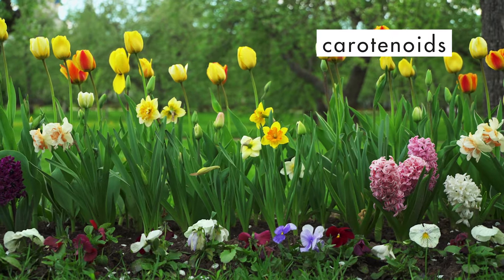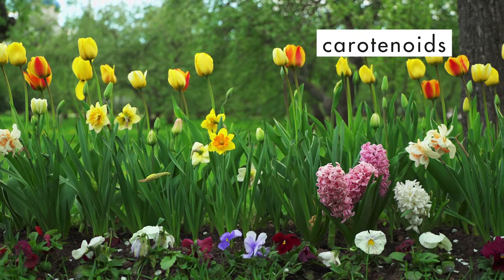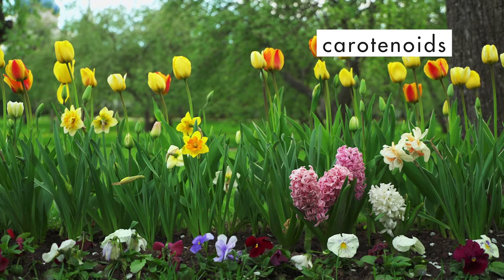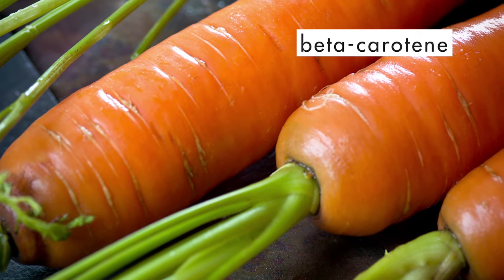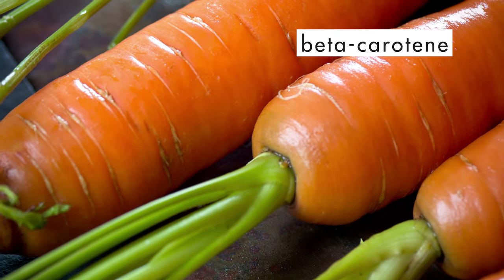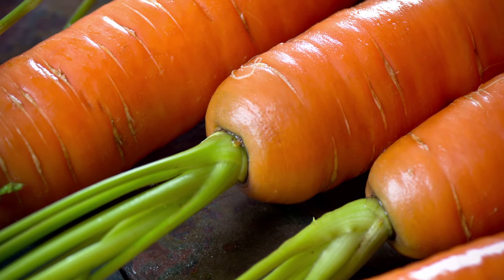Hundreds of other pigments are grouped together in a class called carotenoids. Carotenoids consist of yellow, orange, and red pigments. One common carotenoid is beta-carotene, which is found in carrots. Beta-carotene is converted to vitamin A in the body.